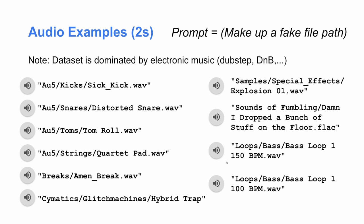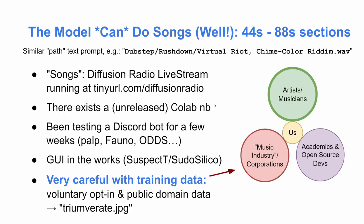Don't hold me to those BPM numbers, but it seems like the model learned some of these things. For our longer songs, when we broke it up into chunks, it would kind of learn aspects of song structure. The model can do full songs — that's what you're hearing on the Diffusion Radio live stream. The prompt is like a file path sitting on your hard drive. Virtual Riot is now one of the artists using this as part of our testing — this was not part of the dataset but turned out really well. There is a Colab notebook out there that we haven't released yet.